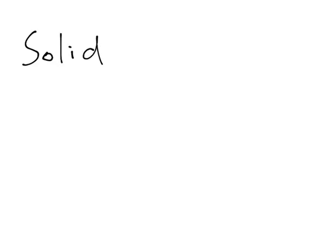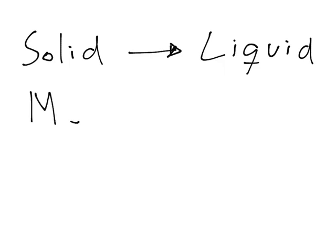In this video, I will explain the different transitions between the three phases of matter. The first transition is between solids and liquids. When a solid goes to the liquid state, this process is called melting or fusion.